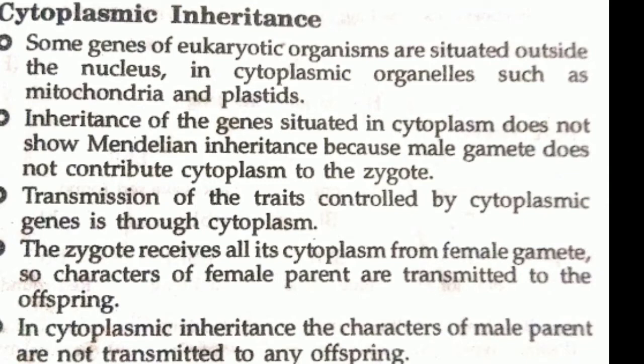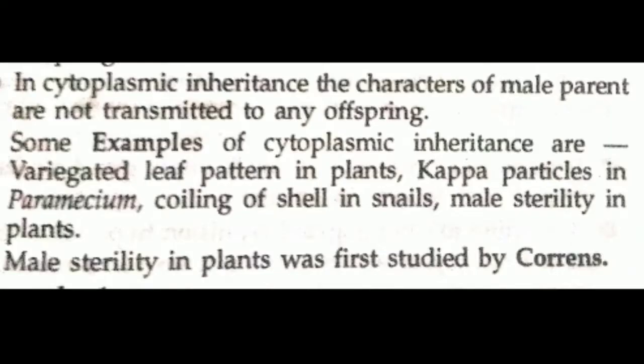Some important examples of cytoplasmic inheritance are: first, variegated leaf pattern in plants; second, kappa particles in Paramecium; third, coiling of shell in snails; and fourth, male sterility in plants. The coiling of shell in snails is an important example, and we will study dextral and sinistral coiling in detail.